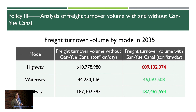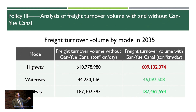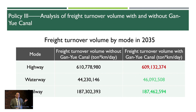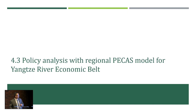We found that if that canal project is approved and built, there is actually a significant reduction in the tonnage-kilometers on highways. The other greener modes — waterway and railway — will see increased tonnage and kilometers. The third model is the regional model we developed for the Yangtze River Economic Belt.